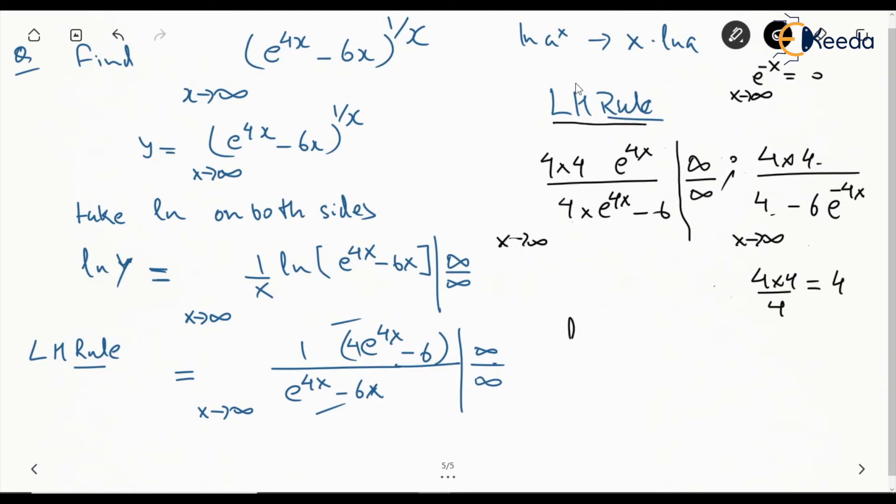So what we found is ln y equal to 4. This is not y, this is ln of y, which gives y is equal to e to the power of 4 once we are applying anti-log.